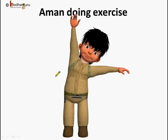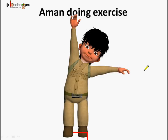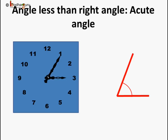Here, Aman is doing exercise. He stretches his hands this way. Can you tell what is the angle formed by these two hands? If you see, it is a right angle. So in this position, we can say the two hands are at right angles to each other. Here we have drawn two perpendicular lines to represent it is a right angle, or that the angle is equal to 90 degrees.